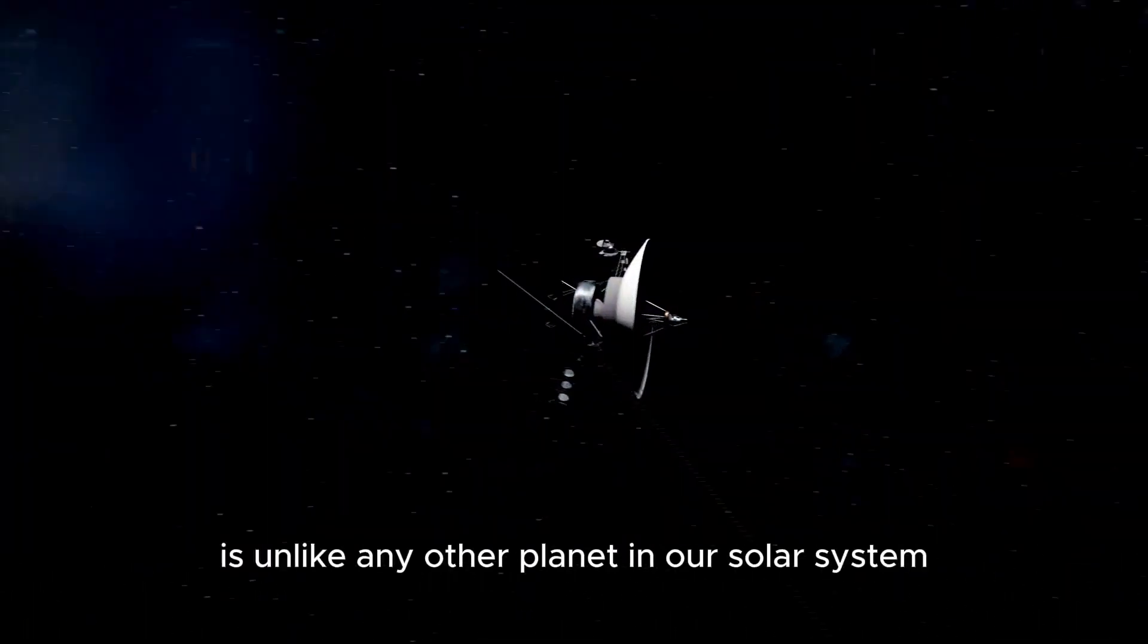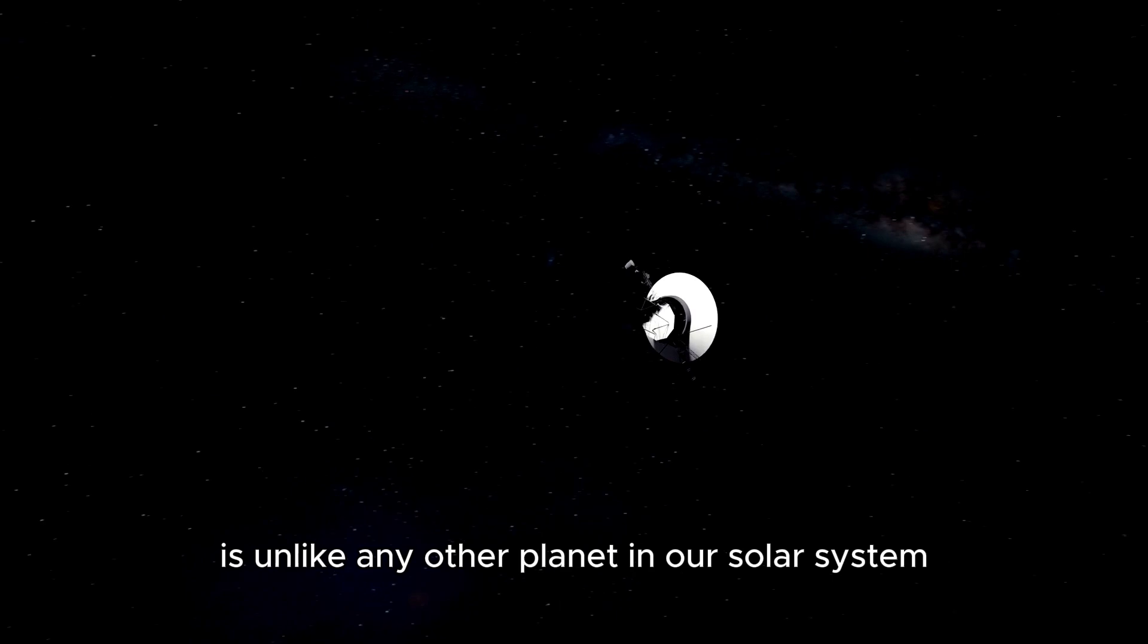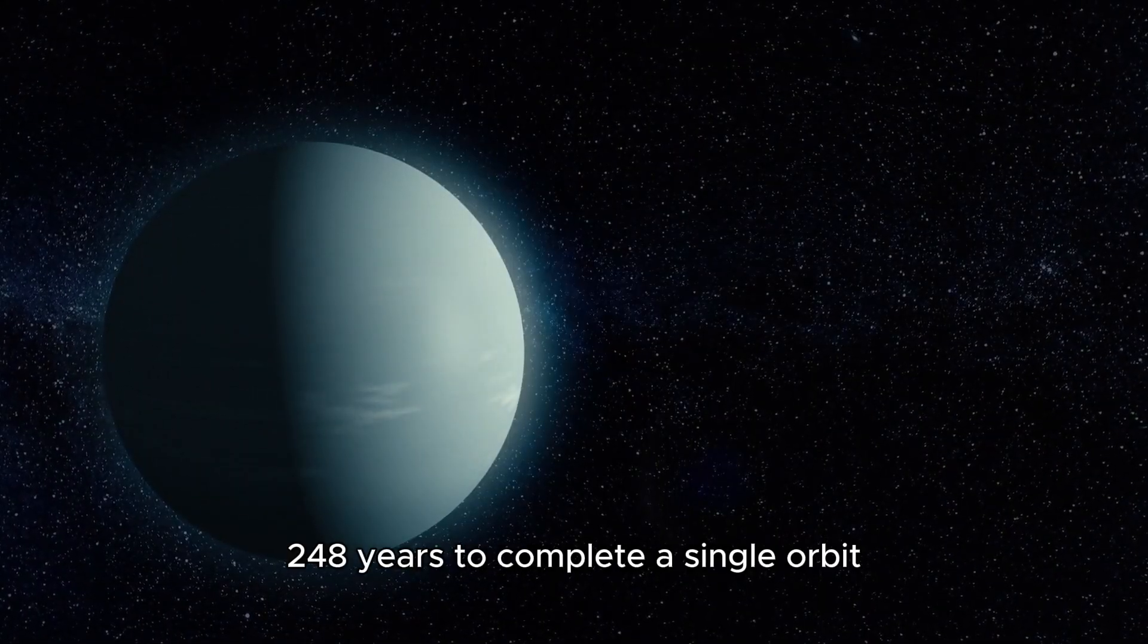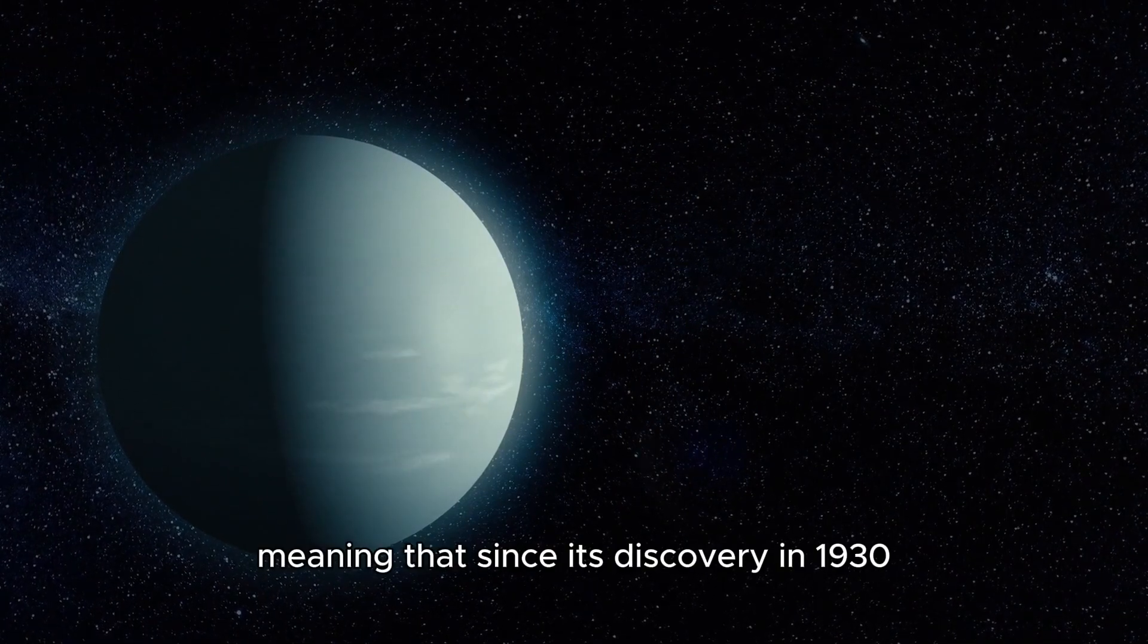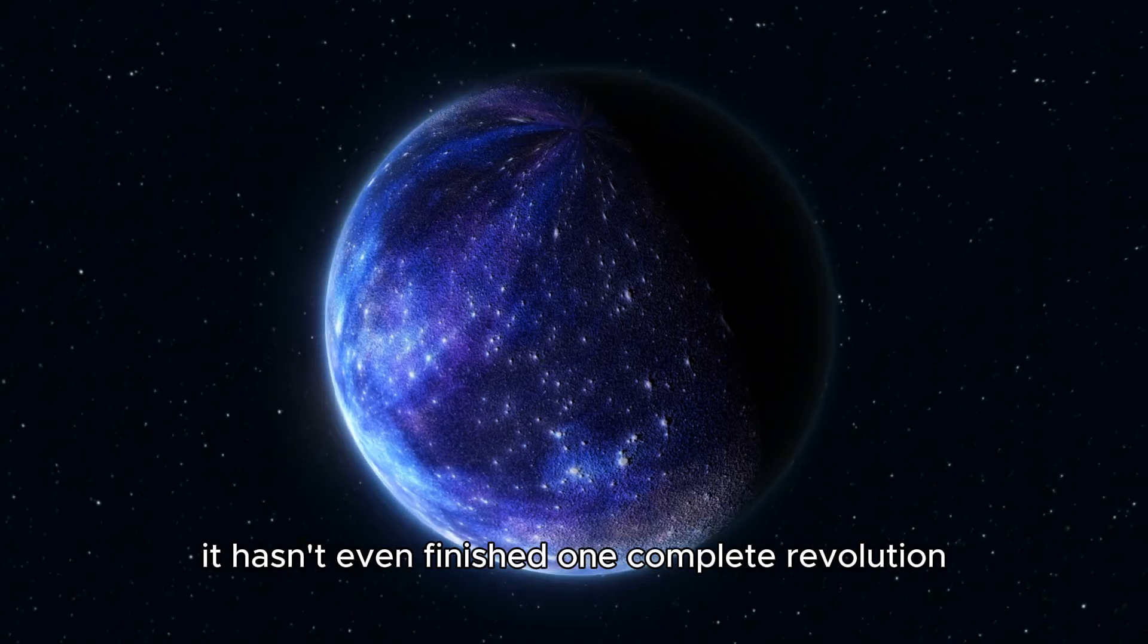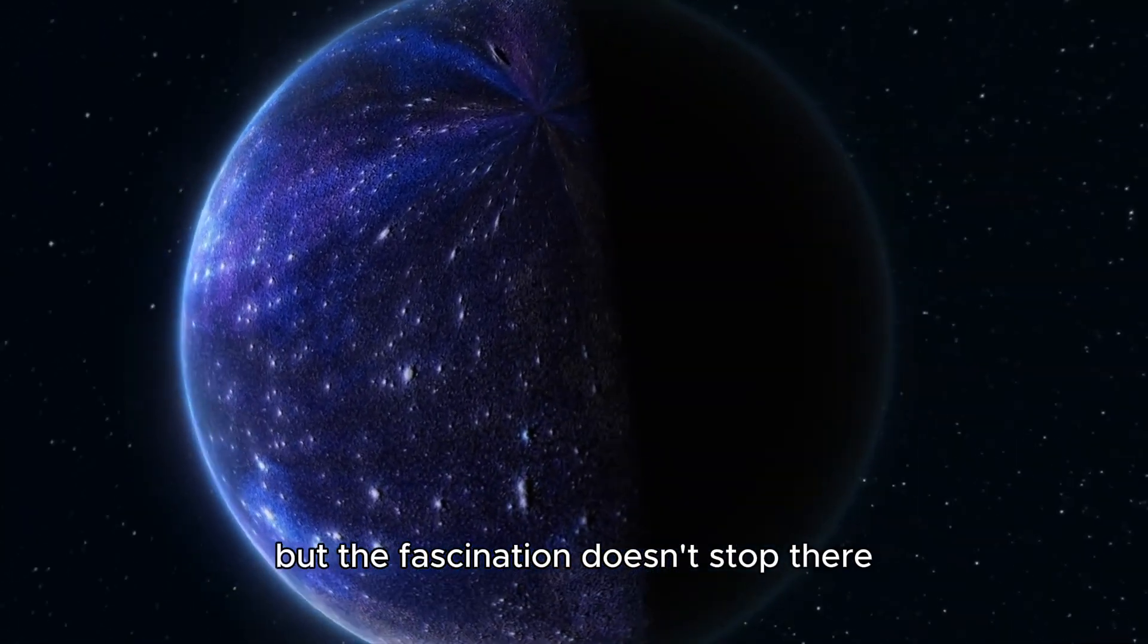Pluto's orbit around the Sun is unlike any other planet in our solar system. It takes an astonishing 248 years to complete a single orbit, meaning that since its discovery in 1930, it hasn't even finished one complete revolution.